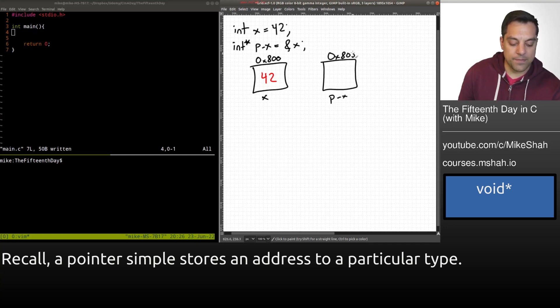And it stores inside of it the address of the thing that it points to. So this will be 0x800. So again, that's how pointers work. All pointers do is store an address, and of a particular type. So this is a pointer to integers.